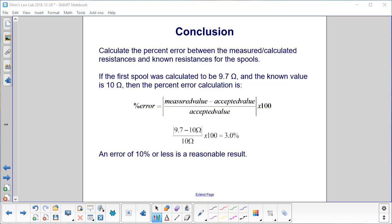Calculate the percent error between the measured, calculated resistances and known resistances for the spools. If the first spool was calculated to be 9.7 ohms, and the actual value is 10 ohms as listed on the spool, then the percent error will be the measured, calculated value minus the accepted value over the accepted value, take the absolute value of that, times 100, and we come up with 3.0%. An error of 10% or less is a reasonable result.